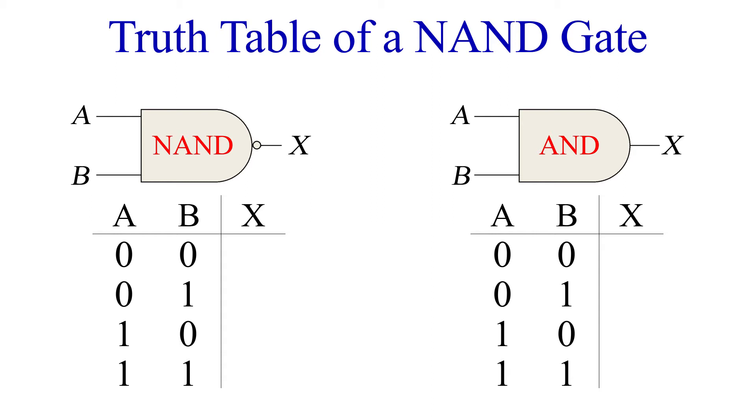Here are the input combinations. So the first input is zero zero. A normal AND gate would produce an output of zero. Since the NAND gate inverts this output, zero zero produces an output of one. The next two rows have one high and one low input.